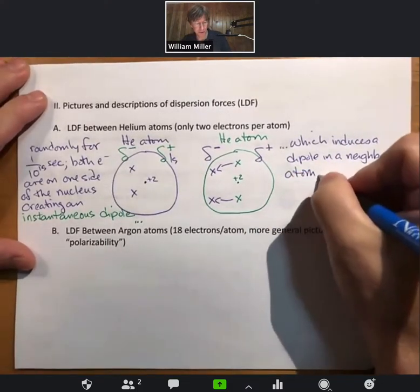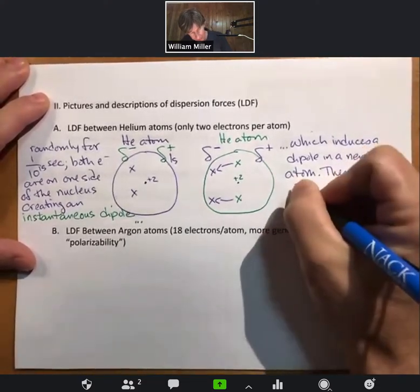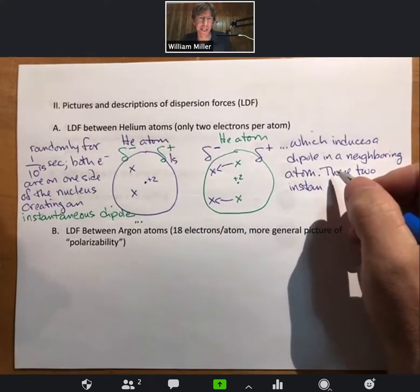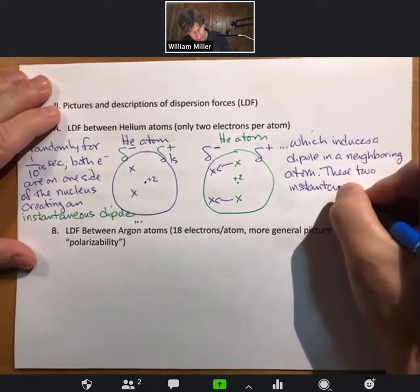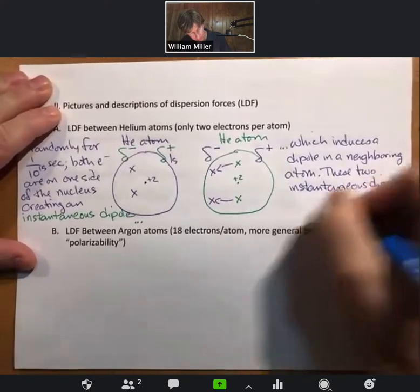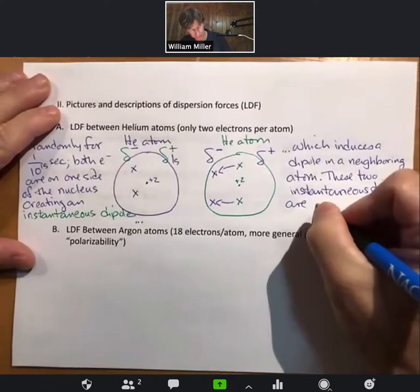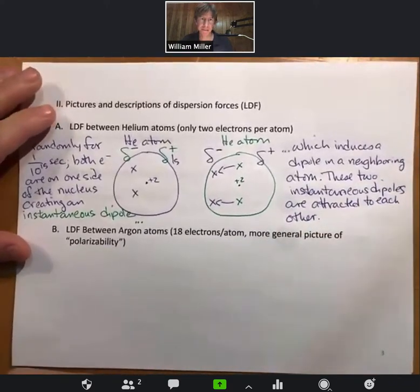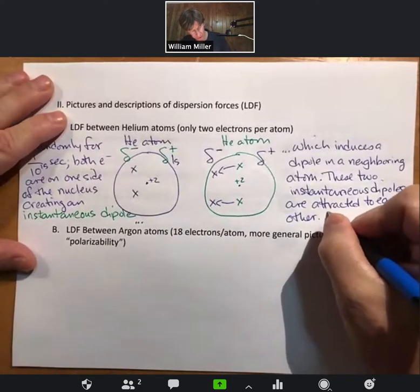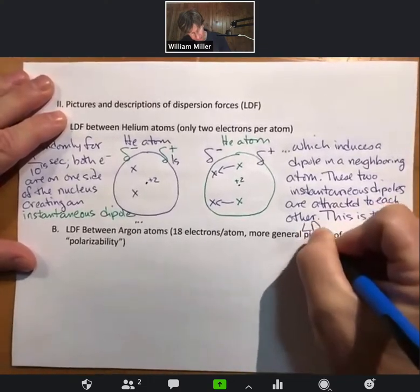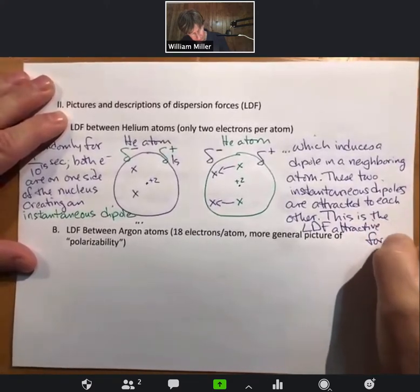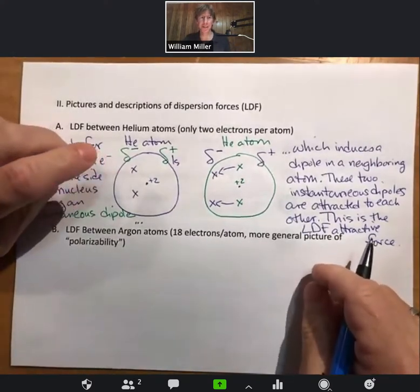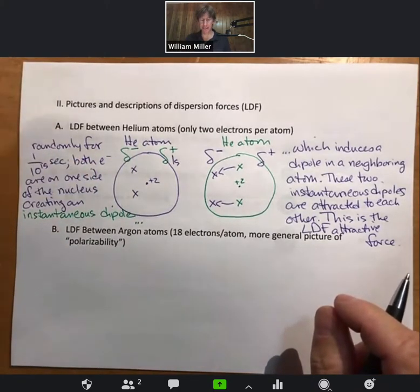These two dipoles are attracted to each other. Even though this induced dipole is only present for 1 over 10 to the 15th seconds, the two particles are attracted to each other. This is the LDF attractive force, and it is the weakest of the intermolecular forces because it is due to random fluctuations and exists only instantaneously.